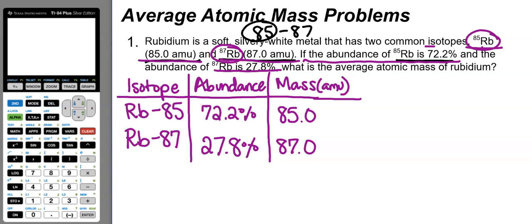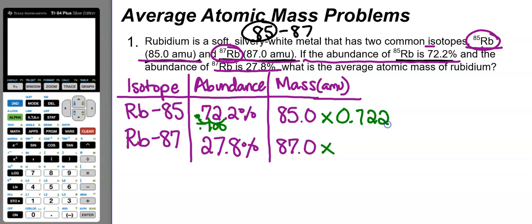Now we calculate the weighted average atomic mass by finding mass contributions — multiplying each mass by its percent abundance as a decimal. To convert a percentage to a decimal, divide by 100 (move the decimal point two places to the left). So 72.2% becomes 0.722. For rubidium-85: 85.0 × 0.722.